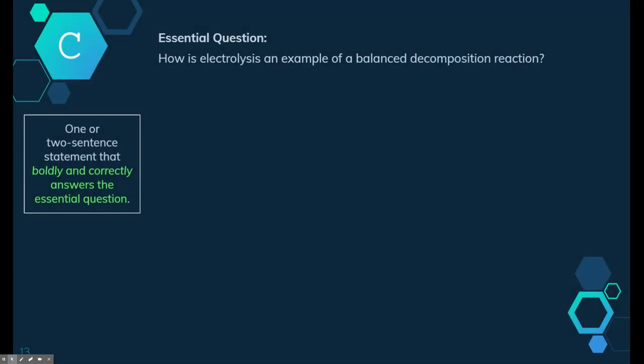Let's start with the claim. Now the claim is a one or two sentence statement. It's very short and concise and it boldly and correctly answers the essential question. So we need to review what the essential question is, typically given at the beginning of the lab or discovered through the introduction and the process. So the essential question for this lab is,